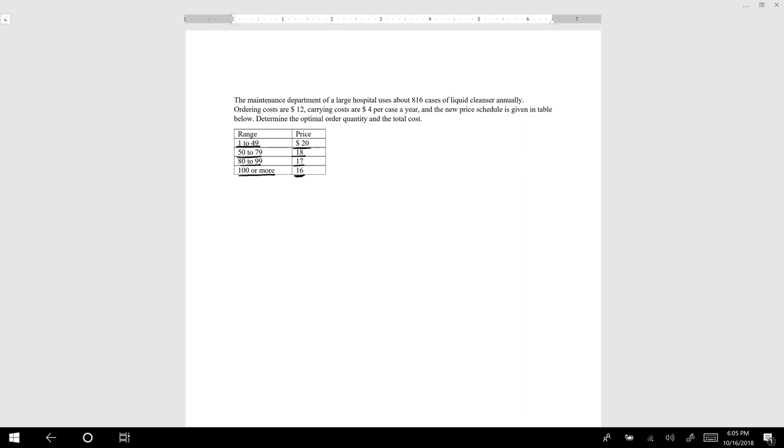To solve such problems, the first step is to calculate your EOQ or Q optimal, which is given by the square root of 2DS by H. Our demand D is 816 cases. Our ordering cost S is $12 per order, and our carrying cost or holding cost H is $4 per case per year.